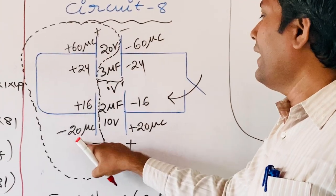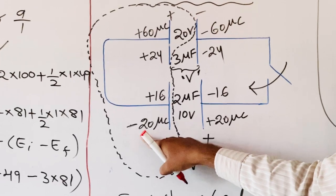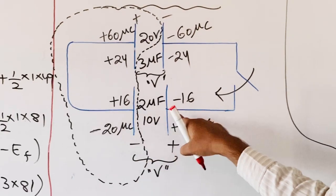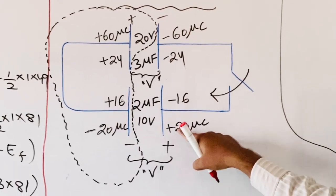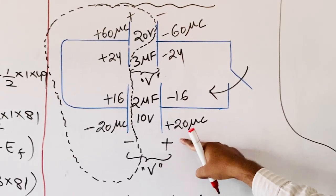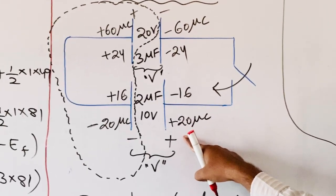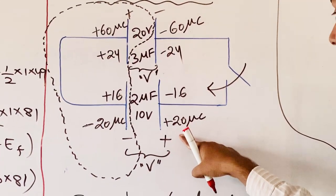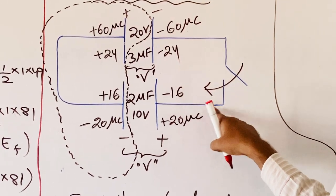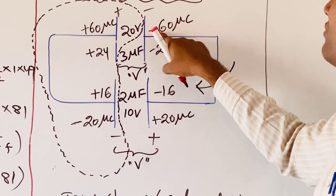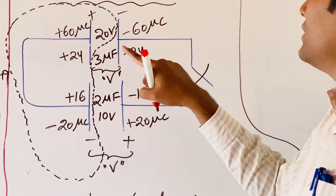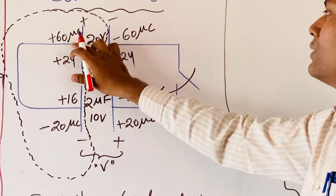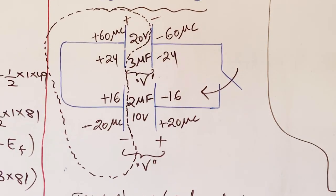The 36 microcoulombs lost by one plate was added to the adjacent plate. That plate previously had −20 microcoulombs; with addition of 36, it becomes +16 microcoulombs. The plate that previously had +20 microcoulombs loses 36 microcoulombs, becoming −16 microcoulombs. The plate at −60 microcoulombs gains 36 microcoulombs, becoming −24 microcoulombs. The charge transferred from one plate to the other is 36 microcoulombs.